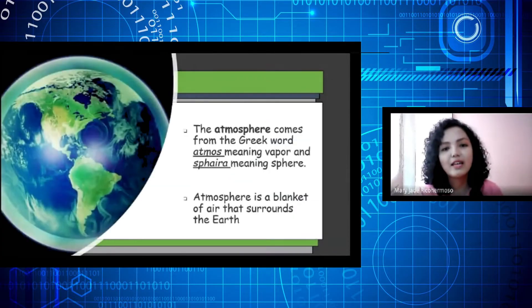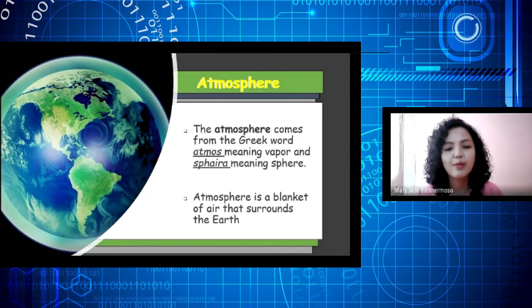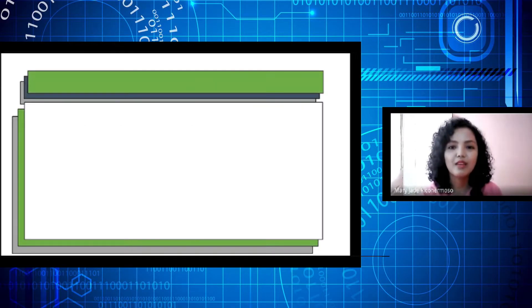Atmosphere. What is atmosphere? Atmosphere comes from the Greek word atmos, meaning vapor, and spira, meaning sphere. Atmosphere is a blanket of air that surrounds the Earth. Atmosphere is also an example of solution.